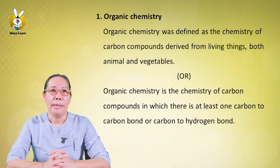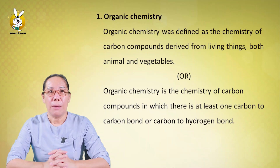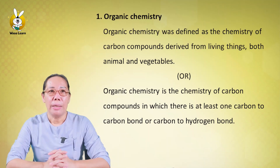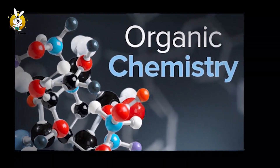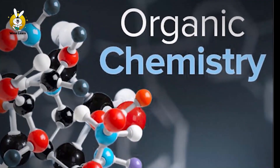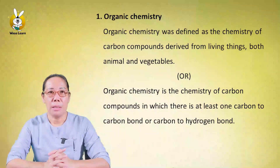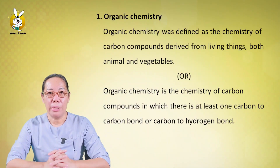Organic chemistry was originally defined as the chemistry of carbon compounds derived from living things, both animals and vegetables. The modern definition is the chemistry of carbon compounds in which there is at least one carbon-to-carbon bond.